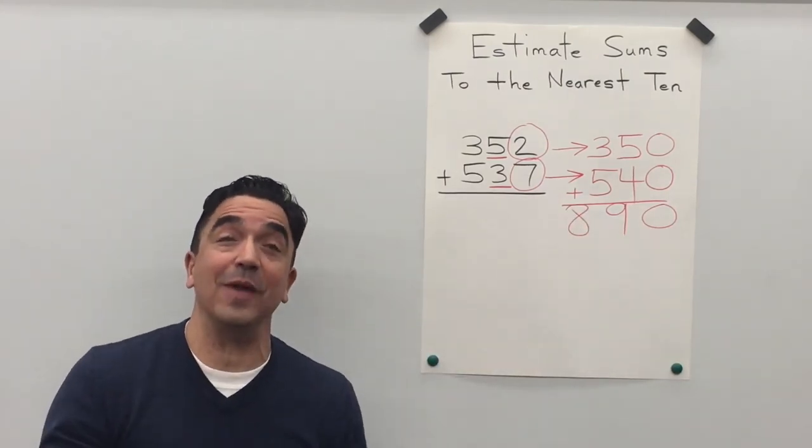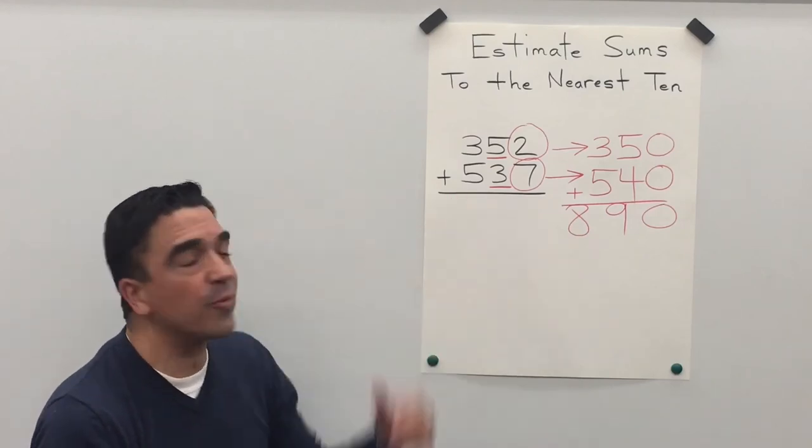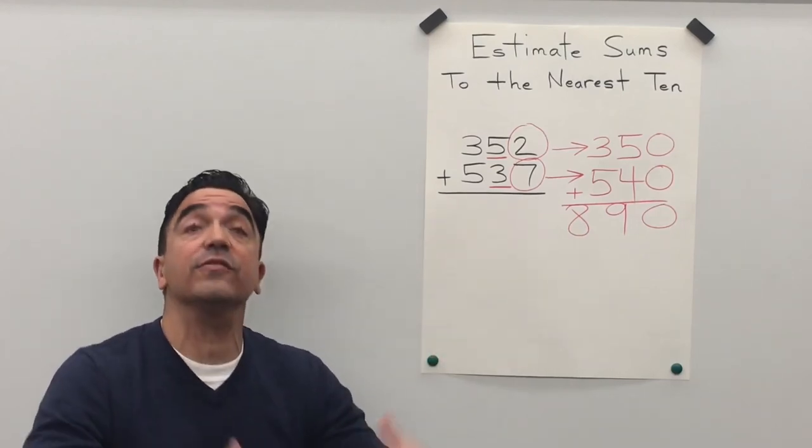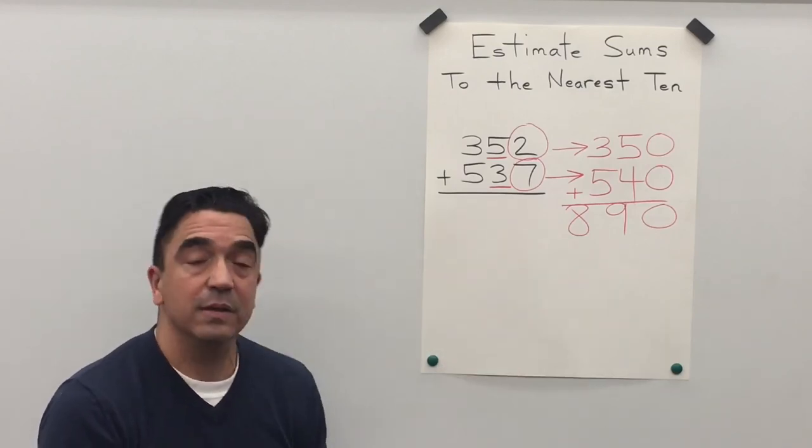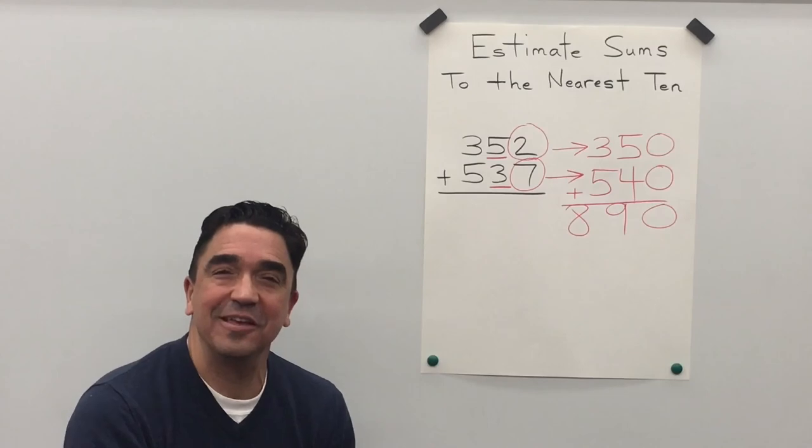So when we estimate sums to the nearest ten, three hundred fifty two plus five hundred thirty seven gives us a sum of eight hundred ninety. And that concludes our lesson.